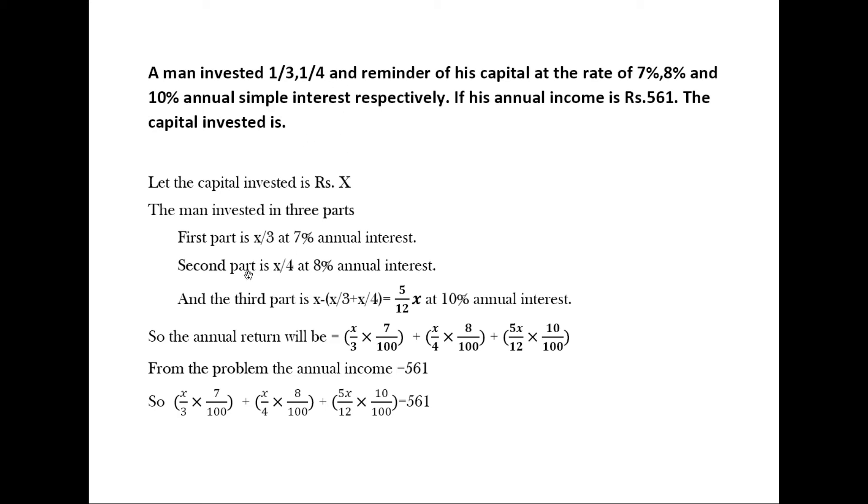And the third part is the remainder, that is X minus (X by 3 plus X by 4), which equals 5 by 12 X, at 10% annual interest.